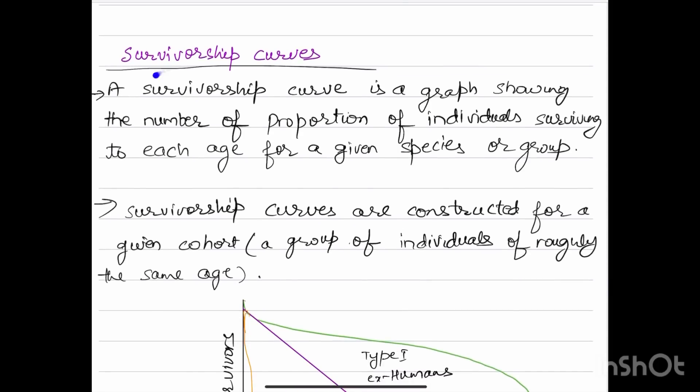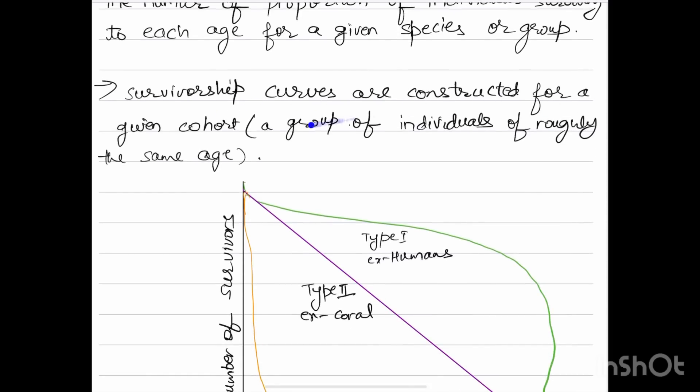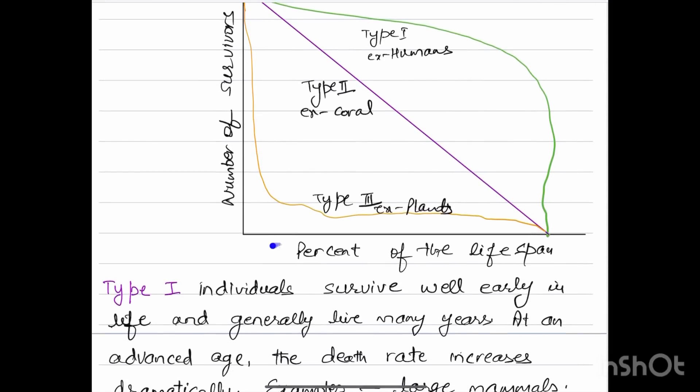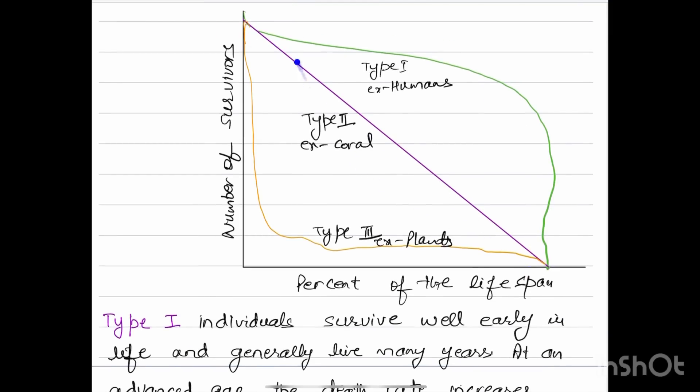Survivorship curves: a survivorship curve is a graph showing the number or proportion of individuals surviving to each age for a given species or group. Survivorship curves are constructed for a given cohort, a group of individuals of roughly the same age. There's type 1, type 2, and type 3. Type 1, like humans, they survive very well early in life. Type 2 individuals have a death rate that is relatively constant. Type 3 individuals have a low chance of survival, and those who do survive may live to an advanced age.